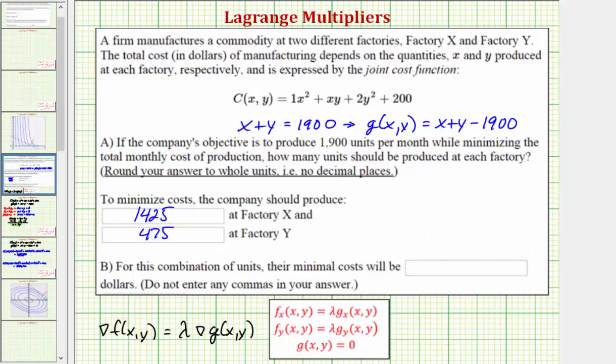So going back to our question, for part b we have 3,158,950 dollars as the minimum cost per month.